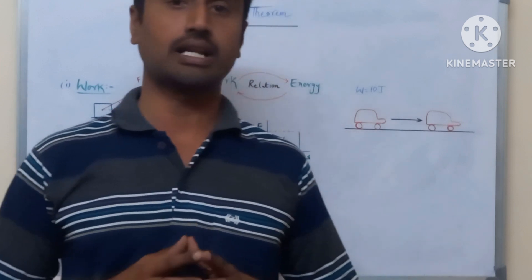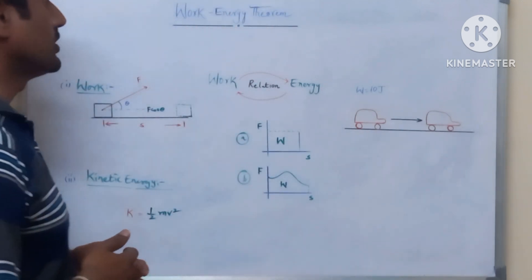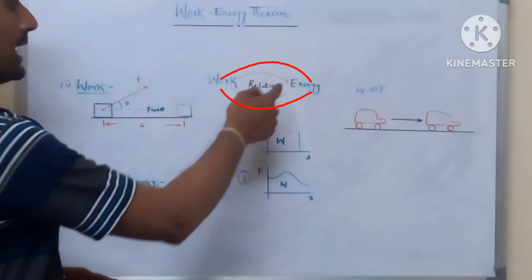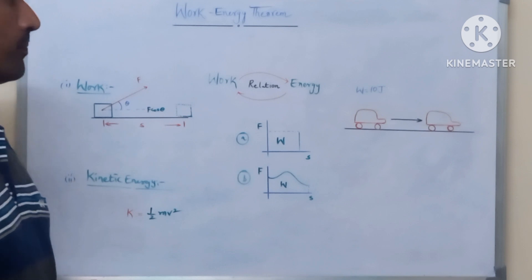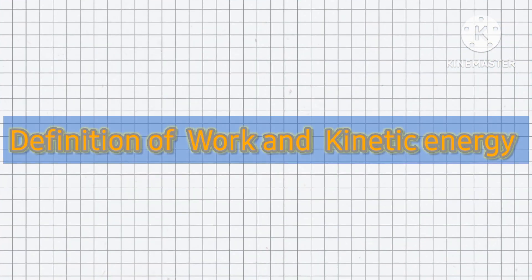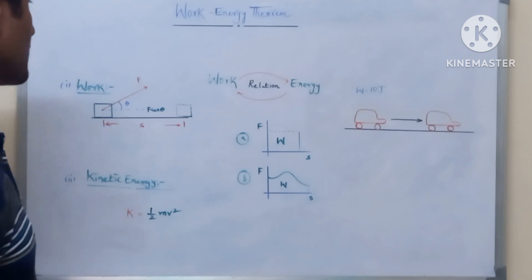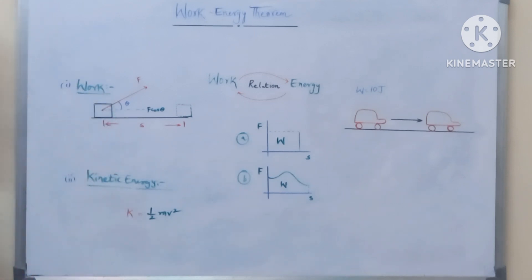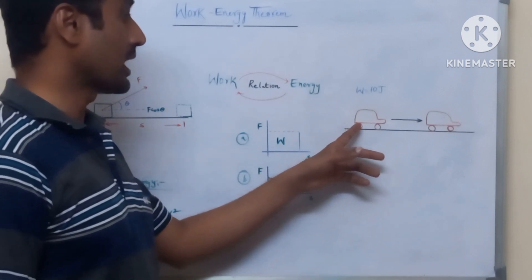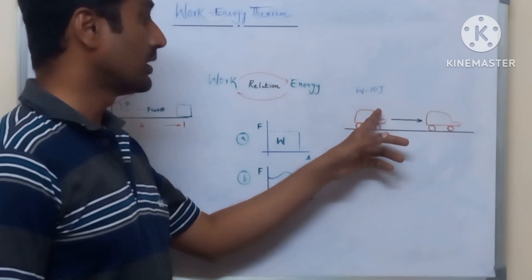Hello students, welcome to physics class. In this video we will discuss the work-energy theorem. The work-energy theorem gives the relationship between work and energy. Work is a transfer of energy, and energy is a measure of work done on the body. When work is completed it manifests into energy. For example, 10 joules of work done on moving a car is transferred into kinetic energy.